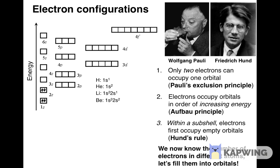This configuration is consistent with both Pauli's exclusion principle and Hund's rule. For boron, atomic number 5, the first four electrons occupy the same orbitals as for beryllium. According to Pauli's exclusion principle, no more electrons can be placed into the only orbital in the 2s subshell. Therefore, according to the Aufbau principle, the fifth electron must occupy one of the three orbitals in the 2p subshell. The electron configuration for boron is then 1s² 2s² 2p¹: two electrons in the 1s subshell, two in the 2s subshell, and one in the 2p subshell.